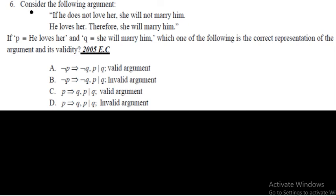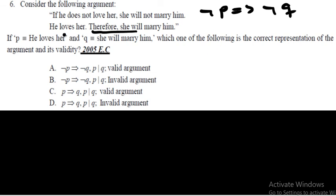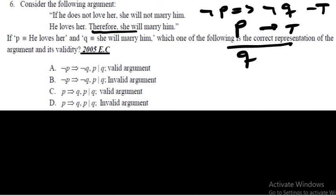A word-problem version: 'If he doesn't love her, she will not marry him. He loves her. Therefore she will marry him.' Let p = 'he loves her' and q = 'she will marry him.' The first premise is ¬p→¬q and the second premise is p. The conclusion is q.